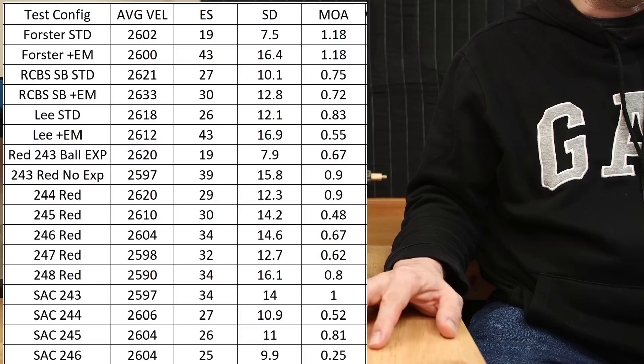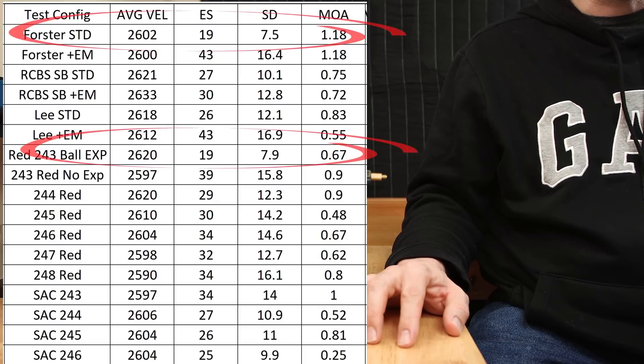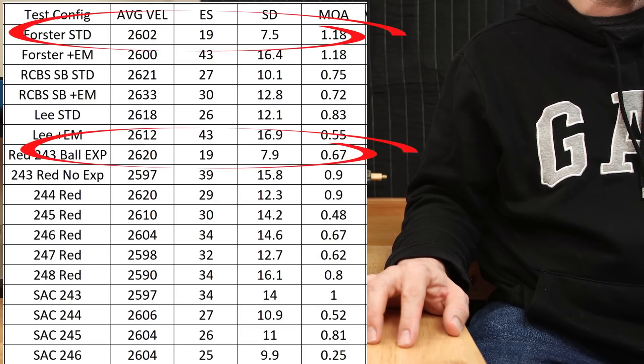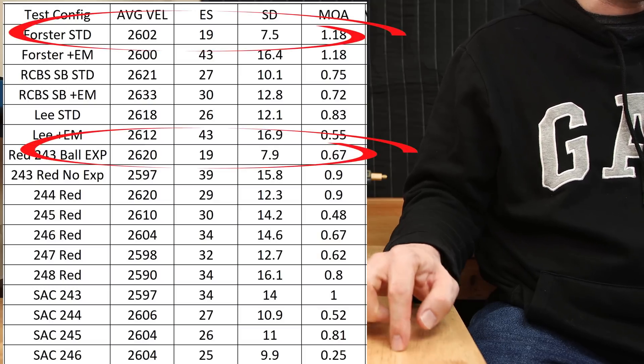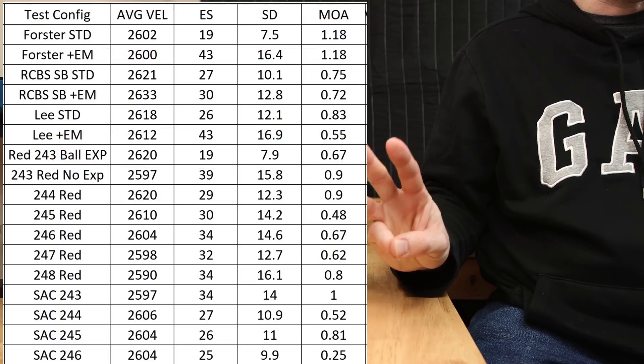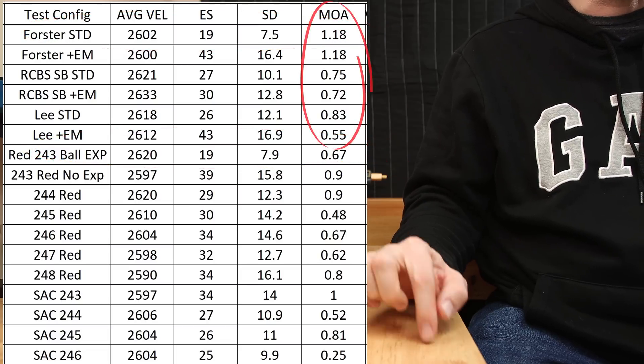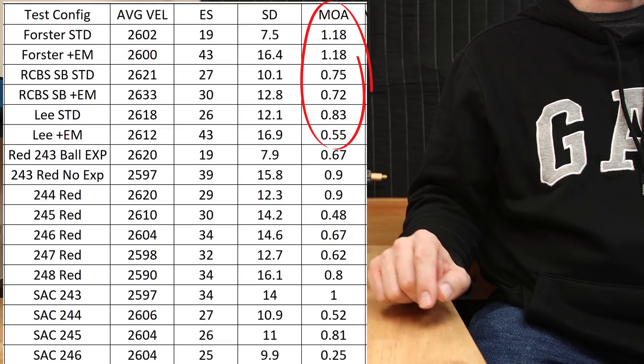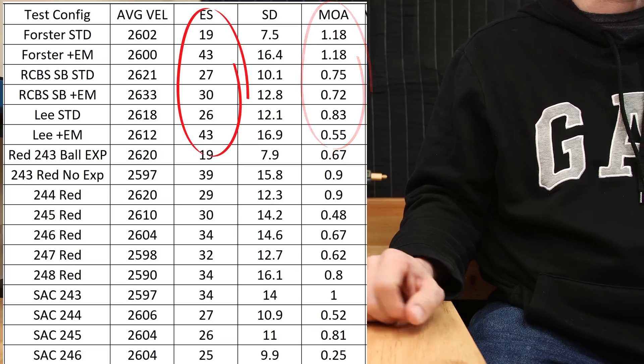But, some very curious results as we look at the velocity data. The lowest extreme spread and standard deviations were mostly with our factory dies, with the stock expanders included. In the three cases where we used expander mandrels, the groups were the same or improved, however, the extreme spread opened up in pretty much every single case.